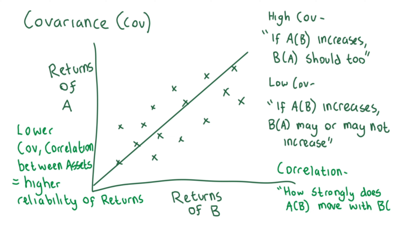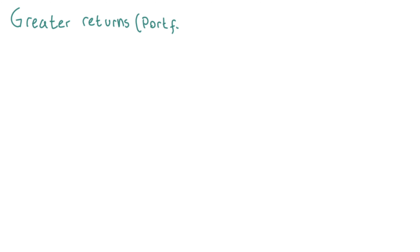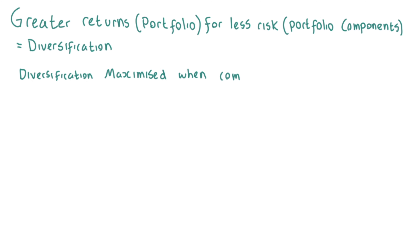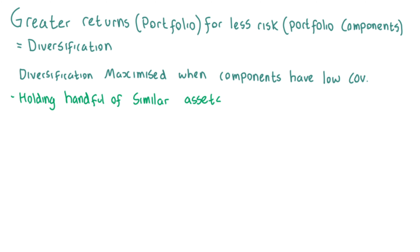Covariance is not the same as correlation. Covariance is an indicator of how two random variables change concerning each other. Correlation, on the other hand, is a derivative of covariance and measures the strength of this relationship. The effect of selecting assets for a portfolio with low covariance can be achieving greater returns for less risk than if we purchased any one of these assets individually. This is the mathematical way to maximize on diversification.